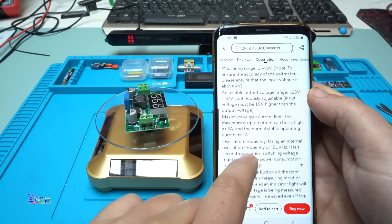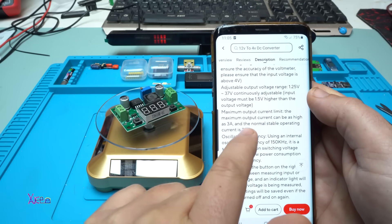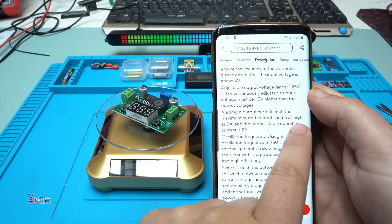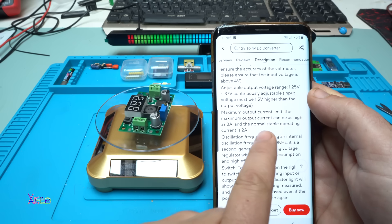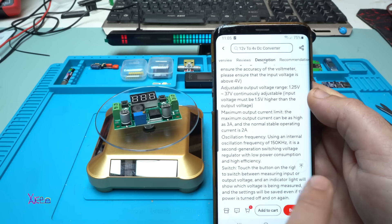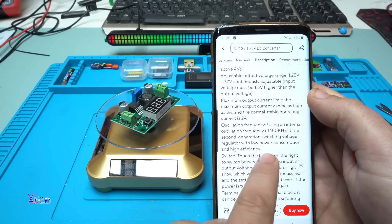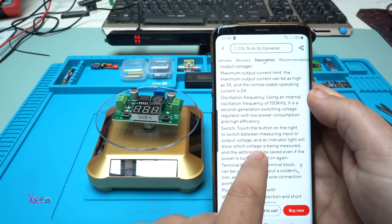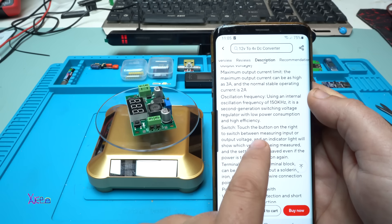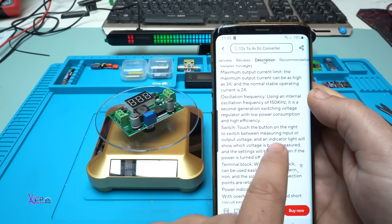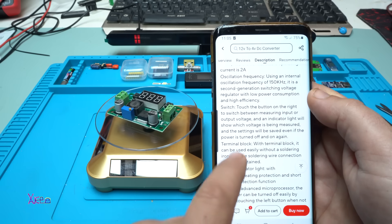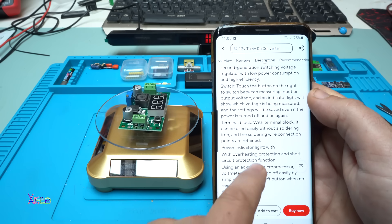Let's see what it says. The maximum output current can be as high as 3 amperes, and the normal stable operating current is 2 amperes. It uses an internal oscillation frequency of 150 kilohertz. One of the buttons on the right switches between measuring the input or output voltage. Beautiful.